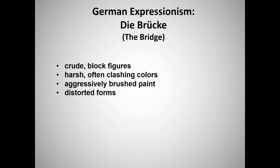Here's a passage from Nietzsche's Thus Spake Zarathustra that gave Die Brücke — the Bridge — its name: 'Man is a rope stretched between the animal and the superman, a rope over an abyss. A dangerous crossing, a dangerous wayfaring, a dangerous looking back, a dangerous trembling and halting.'